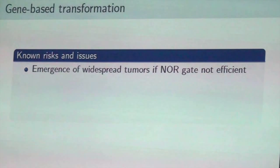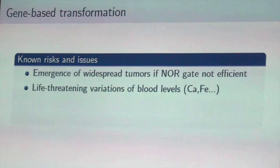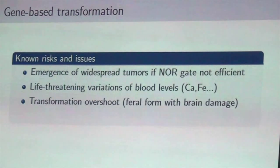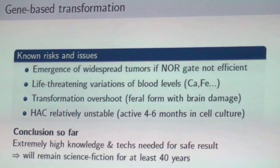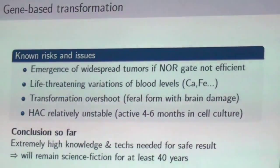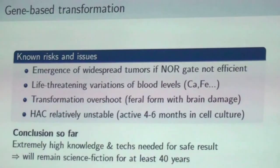There are still a lot of risks. If the organ rebuilding doesn't work correctly, you get a generalized cancer and are dead within a month. The rebuilding will also probably lead to life-threatening depletion of blood, calcium, and iron because you are building bones and tissues very fast. If you don't control the genes correctly, the final furry form may not be what we want — and the brain could be modified beyond repair. The artificial chromosome is also probably not stable enough for a transformation that I think would need one or two years. In conclusion, this possibility of genetic transformation will remain science fiction for about 40 years until we have the knowledge and know-how to get it working safely.